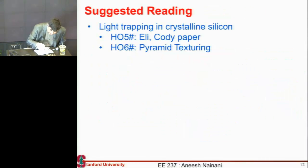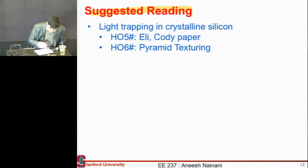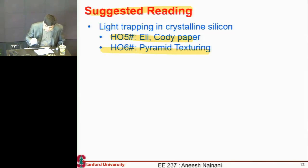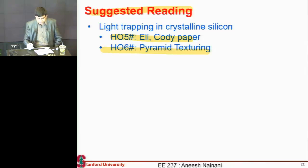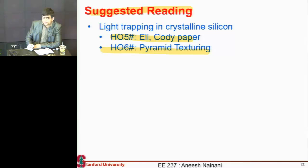At the end of every module I give some references for those who want to learn more or found the material unclear. For this light trapping topic for crystalline silicon, I've uploaded two handouts on the class website, and I'll give more resources when we talk about light trapping in thin-film solar cells. Any questions on this, or any doubts from last class?